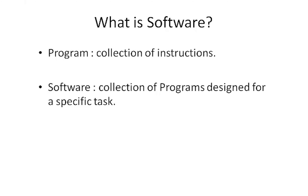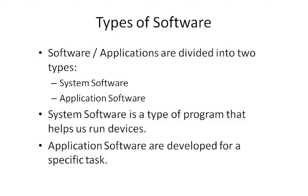A collection of programs designed for a specific task is called software. For example, WhatsApp is an application — someone has written many lines of code, divided into different programs, and that collection of programs makes up WhatsApp. So a collection of programs makes up a software.